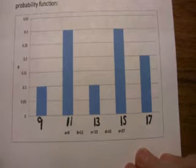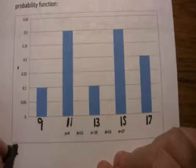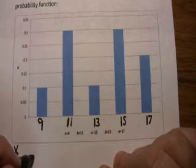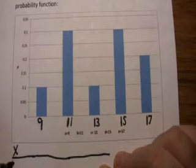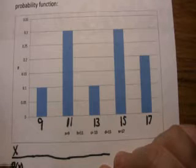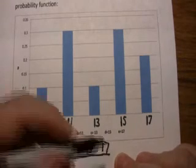Now they want to define the probability function. That's the PDF. So you want to set up your little chart. I'm having trouble with my straight lines here. You've got an x and you've got a P(x). Now x are these numbers down here. So x can be 9, x can be 11, x can be 13, x can be 15, and x can be 17.